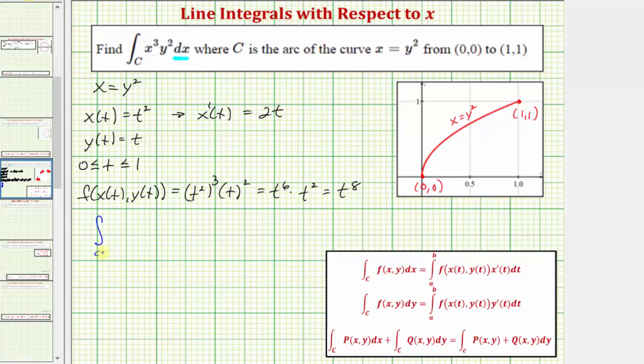The given line integral of x cubed y squared along the curve C integrated with respect to x is equal to the integral of f(x(t), y(t)), which is t to the eighth, times x prime of t dt, which would be 2t dt. And now for limits of integration for t, we'll integrate from 0 to 1 to trace out this curve.